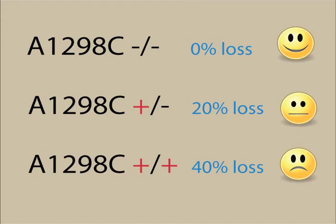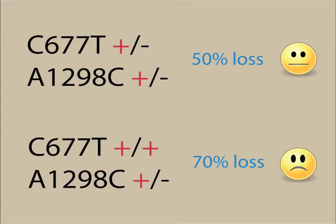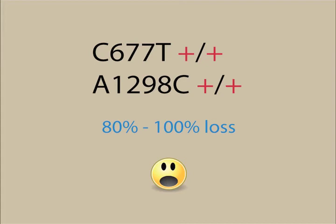It's also possible to have one mutation on both genes. C677T plus minus and A1298C plus minus will result in a 50% loss of function. It's rare but possible to have three mutations, such as C677T plus plus and A1298C plus minus, which results in a 70% loss of function. C677T plus plus and A1298C plus plus results in an 80% to 100% loss of function.